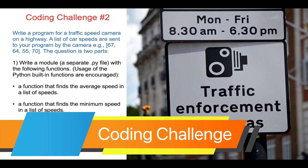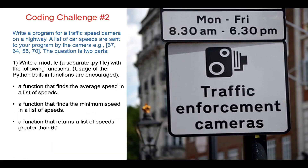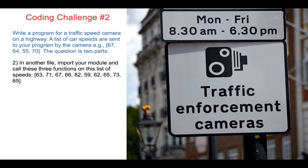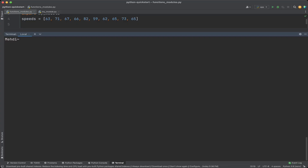Coding challenge: write an application for a traffic speed camera. In the previous lecture we wrote a program using if, elif, and else in a for loop. This time, write a module — a separate Python file — with the following functions: a function that finds the average speed, a function that finds the minimum speed, and a function that returns a list of speeds greater than 60. Then in another file, import your module and call those three functions on the provided speed list. Pause the video and spend seven to ten minutes writing your code.